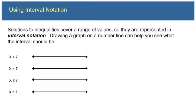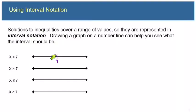Let's take these four inequalities, all compared to seven, and graph them on a number line, then state their interval notation. For x is less than seven, I mark my number line with a seven and shade the side that contains the numbers fitting this description.